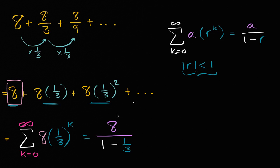And so this is all going to converge to 8 over, 1 minus 1/3 is 2/3, which is the same thing as 8 times 3/2, which is, let's see, divide 8 by 2, that becomes 4, and so this will become 12.